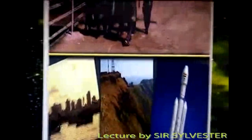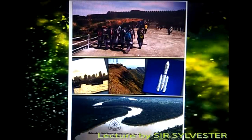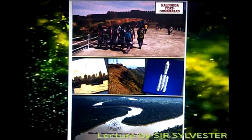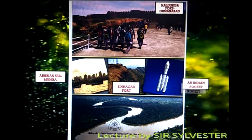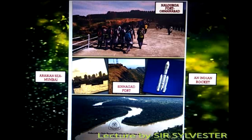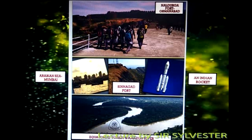On the back cover page, there are certain images. The first is the Naldurga fort located at Osmanabad in Maharashtra. Next, the beautiful Arabian Sea as seen from Mumbai. Next, the Sinhagad fort, again located in Maharashtra. Next, an Indian rocket — ISRO is the organization that takes care of all scientific things related to rockets. And the last, the world's biggest forest, the Amazon forest, also known as the equatorial forest, with the Amazon river flowing through it.